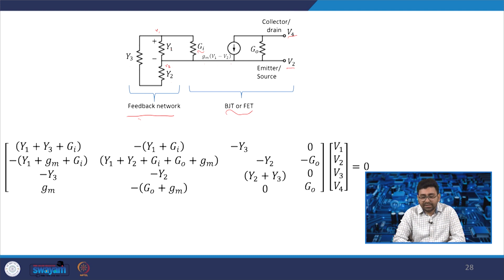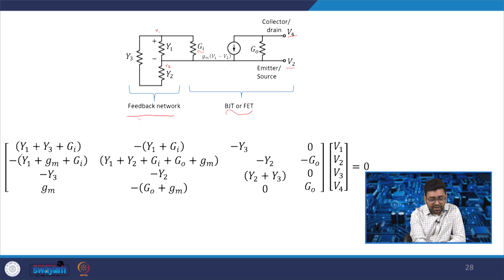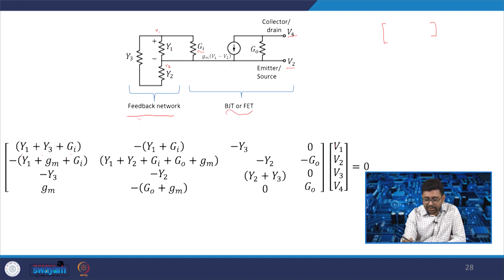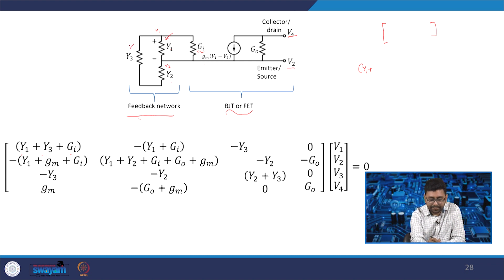For oscillation to occur, the node voltages V1, V2, V3, V4 must satisfy the condition that the determinant equals zero. Writing KCL at each node: at node V1, we get (Y1 + Y3 + G_i) × V1 − Y1 × V2 + 0 × V3 = 0. At node V2: −(Y1 + G_i) × V1 + (Y1 + Y2 + G_i) × V2 − Y2 × V3 = 0, and so on for all nodes, equated to zero.